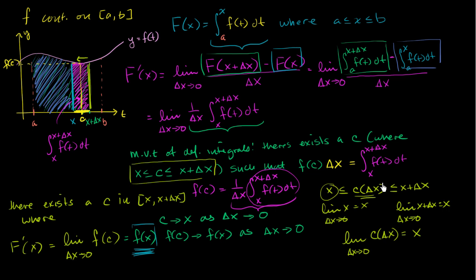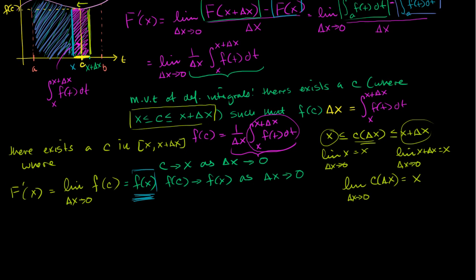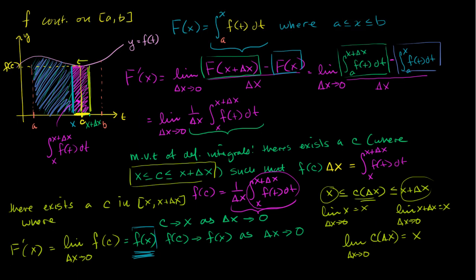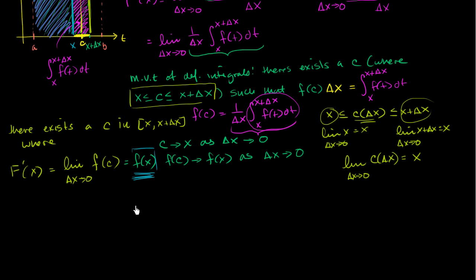Since c approaches x as delta x approaches 0, f of c is going to approach f of x — because f is a continuous function. So we essentially have our proof: we defined capital F of x as that integral, and using just the definition of the derivative, we were able to show that the derivative of capital F of x is equal to f of x.